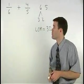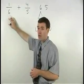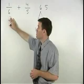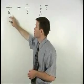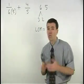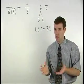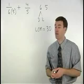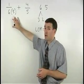In order to get a denominator of thirty in the first fraction, we must multiply our denominator of six by five. The problem is we can't just multiply the denominator of the fraction by five, because that changes its value.